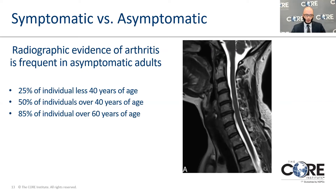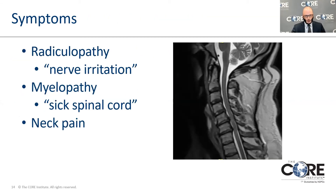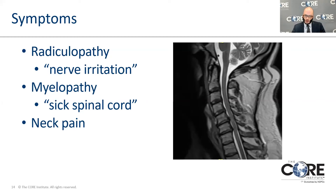Approaching over 90% of people over the age of 60 have evidence of these degenerative changes. When we talk about symptoms, I'm always trying to differentiate how much of the patient's symptoms are coming from neck pain versus the nerves being irritated — that's radiculopathy — versus the spinal cord being irritated — that's myelopathy.